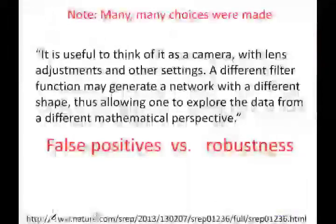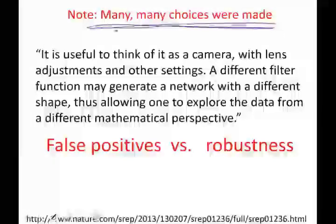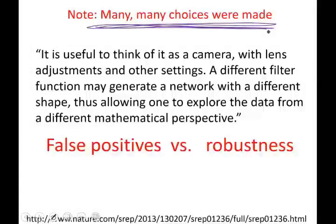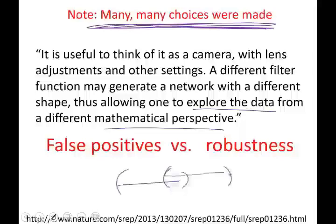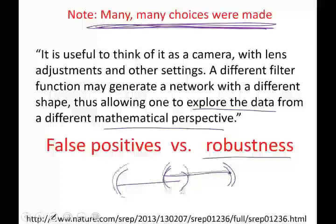So one has to be careful when making many, many choices that you're not just searching until you get something publishable. You have to check how robust your choices are. With Mapper, checking different filter functions is probably exploring the data from different perspectives, so a different output may be expected. But in terms of different clustering methods, different percent overlap, different interval lengths — how robust is your result to choosing different ways of covering your data?